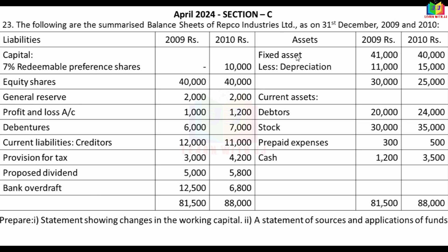The assets side includes: fixed assets less depreciation, and current assets comprising debtors, stock, prepaid expenses, and cash.